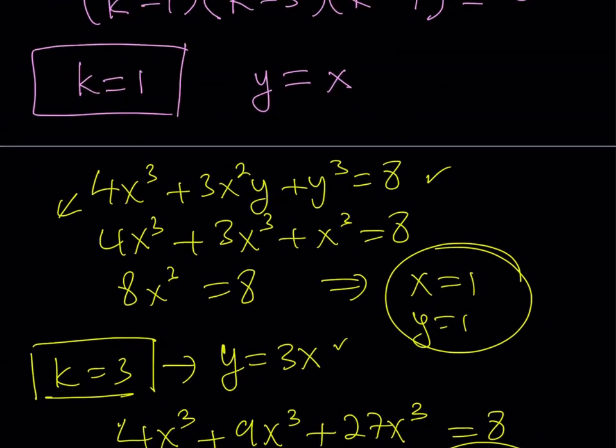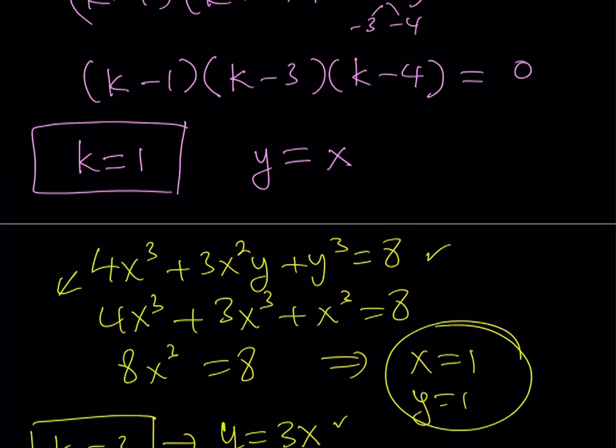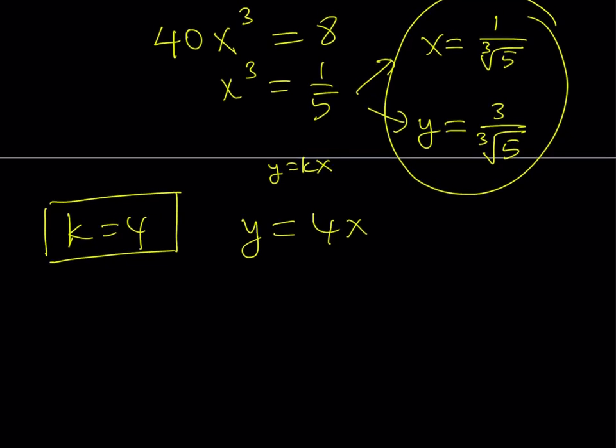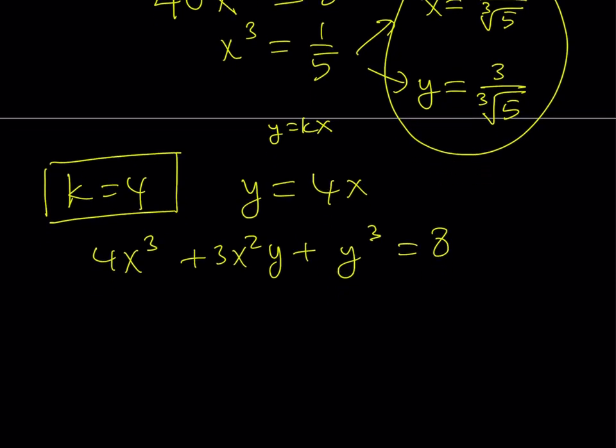Let's go ahead and use the third value, which is k equals 4. So what happens if k is equal to 4? This implies that y is equal to 4x. And if you plug in y equals 4x here, this is my original equation. Again, let me write it one more time. I'm using the first equation. Replace y with 4x.